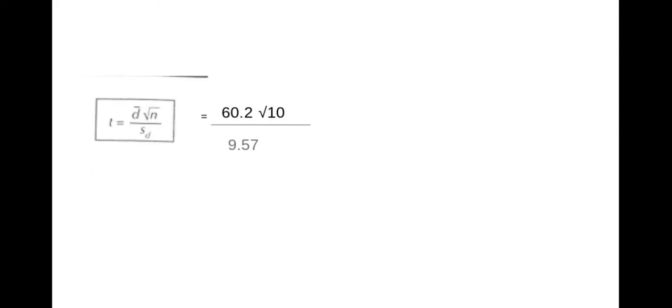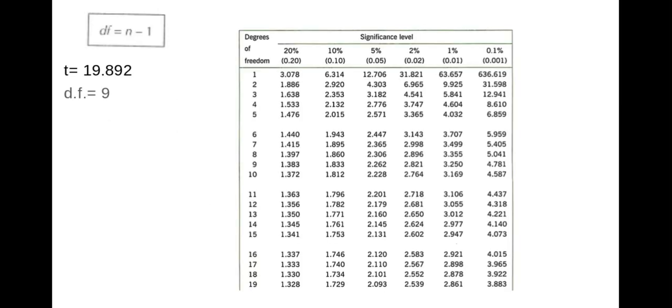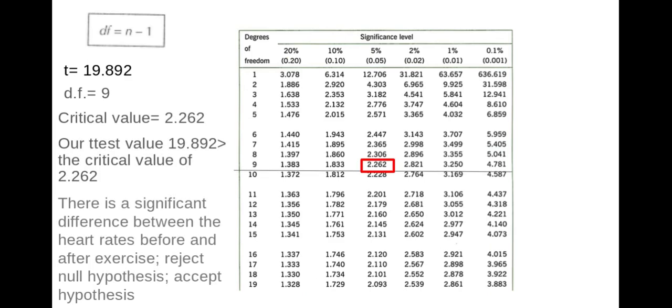So here I have it. That's the data plugged in and then that is my t-test result. Again I then need to look that up on a table so my degrees of freedom is 10 minus 1 so I'm looking at 9. I plug in my data that's my critical value and I compare my t-test value to it.